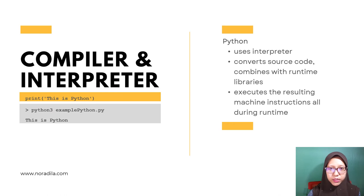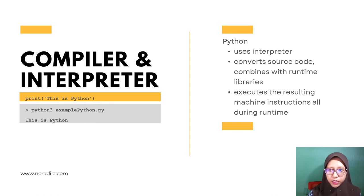Programming languages such as Python use an interpreter that converts the source code, combines with runtime libraries, and executes the resulting machine instructions all during runtime. There is no pre-compiled program to run. For example, the Python code is saved in a file called example_python.py. On the terminal, the command python3 followed by the name of the file example_python.py is typed. It will then display 'This is Python'.